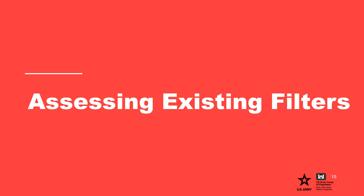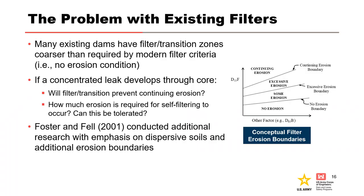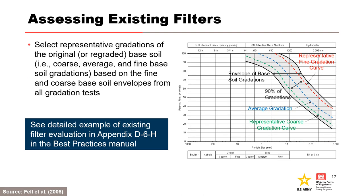Many existing dams have filter or transition zones that are coarser than required by modern filter criteria. Foster and Fell in 2001 conducted additional research with an emphasis on dispersive soils and additional erosion boundaries to help answer the questions of: if a concentrated leak develops through a core, will a filter or transition zone prevent continuing erosion, how much erosion is required for self-filtering to occur, and can this amount of erosion be tolerated? Fell et al. 2008 recommends selecting representative gradations of the original or re-graded base soil, which are indicative of the finer 5%, the average gradation, and the coarser 5% of the base soil gradations.